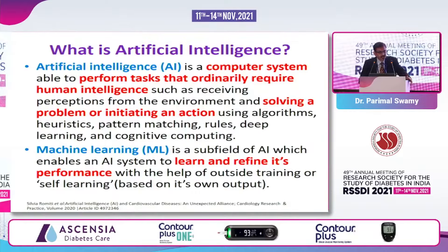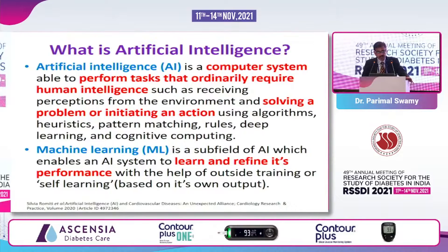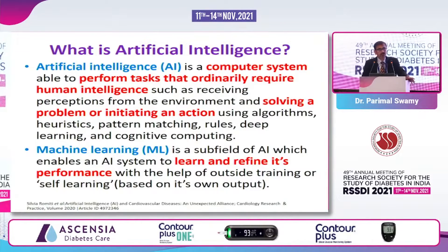Artificial intelligence or AI is a computer system or a program which performs tasks that ordinarily require human intelligence, such as receiving perceptions from the external and internal environment, solving a problem, and initiating a sequence of action to solve a problem. Machine learning, which is a very commonly used phrase in the AI field, is basically the system which enables an AI system to learn and refine its own performance based on internal and external validation. Because of it, the artificial system can learn from its own mistakes or from its own output.